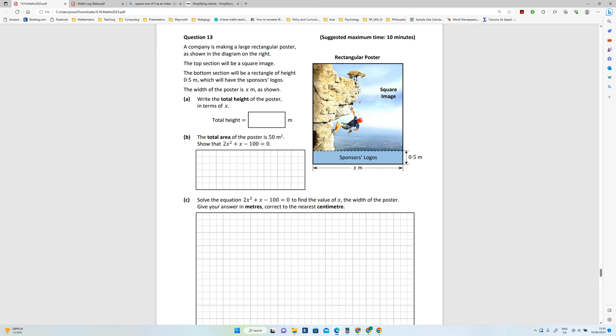Okay, so question 13 of Junior Cert class, Higher Level 2023. A company is making a larger rectangular poster shown on the right. The top section is a square, as you can see here. The bottom section will be a rectangular.